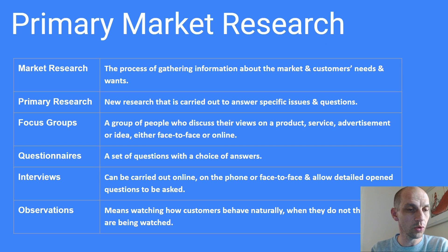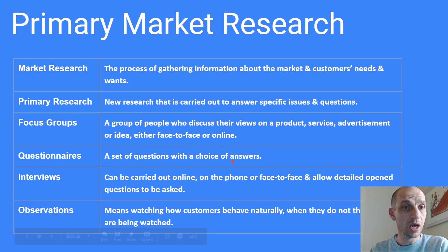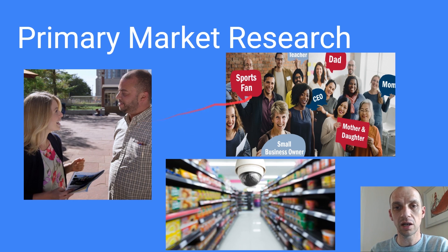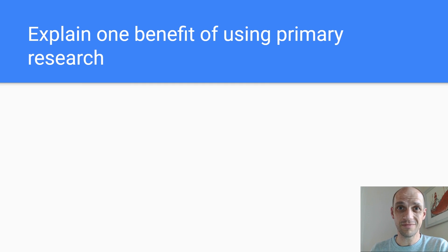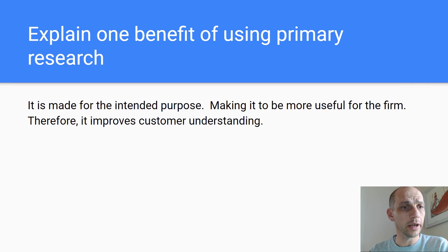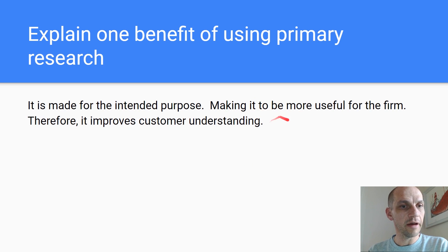Primary market research — a few examples of how you can gather that primary market research: a little interview, focus group maybe, observation — great stuff. Explain one benefit of using primary market research. Give it a go — can you write an answer in 15 words or less? Nine words would be impressive. So: it's made for the intended purpose, making it more useful for the firm, therefore it improves customer understanding.